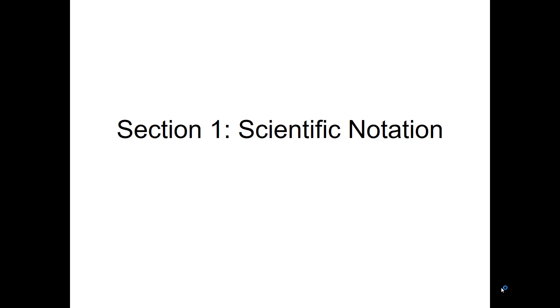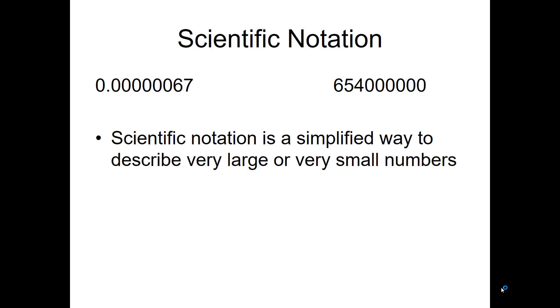In this section, we're going to go through some basic scientific notation and how to do it. First of all, the reason why we use scientific notation is it's a way to simplify and describe very large or very small numbers. It also helps us with significant figures, which is really another lesson.